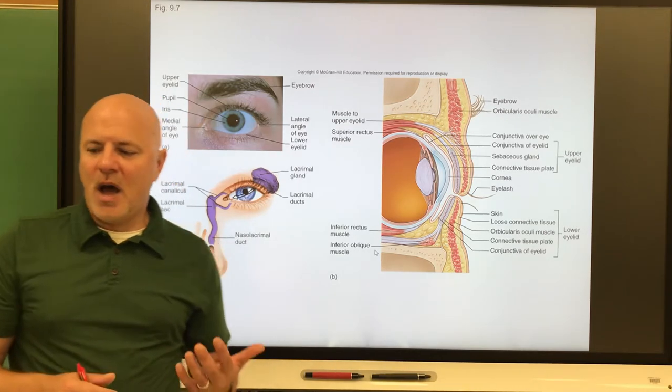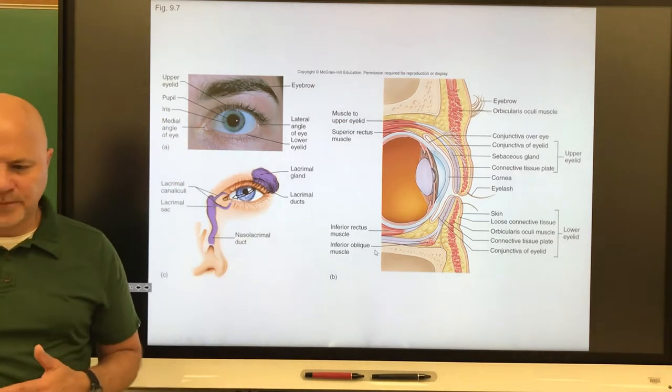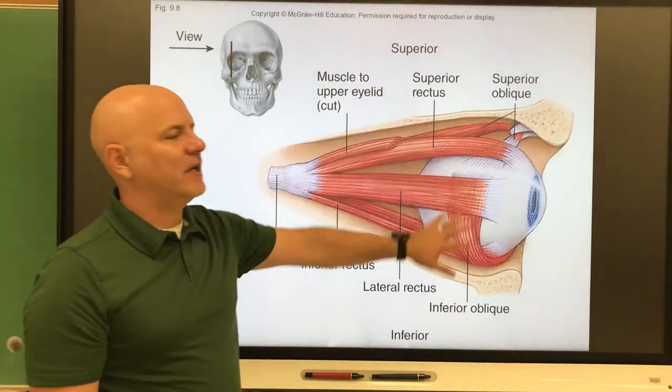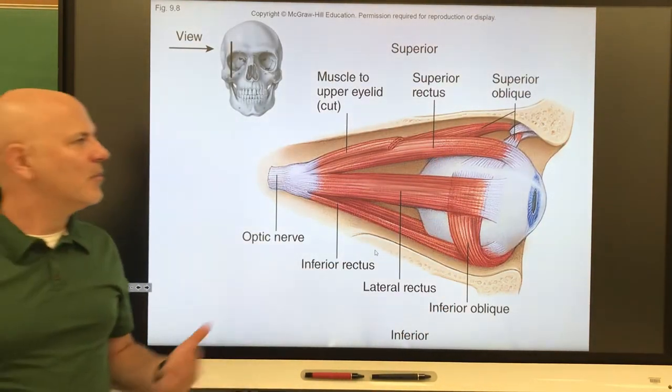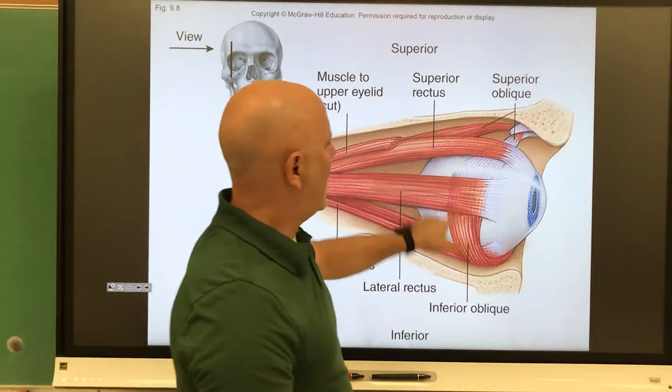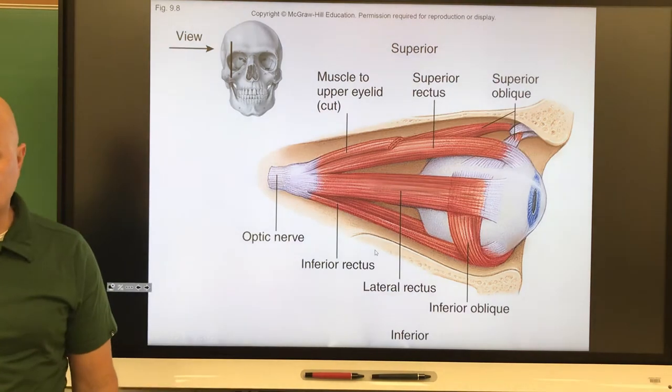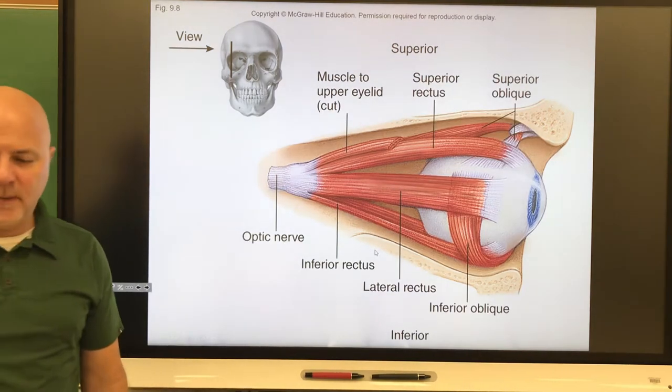Let's move on to the extrinsic eye muscles. The extrinsic eye muscles are the six muscles that move the eye. We have one top, bottom, each side, and then we have a couple of these oblique or angled muscles that help move the eye as well.